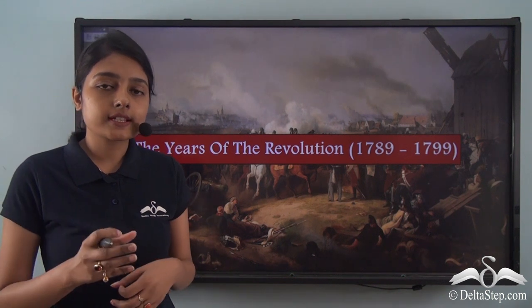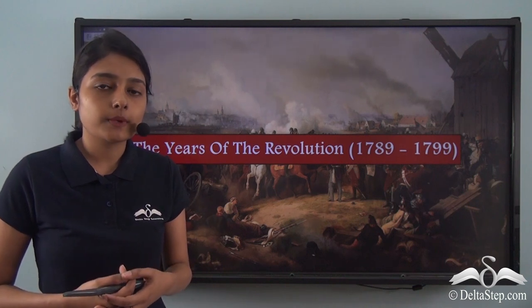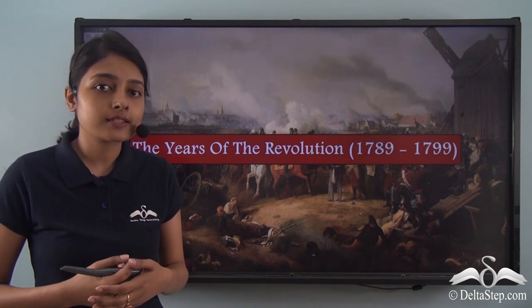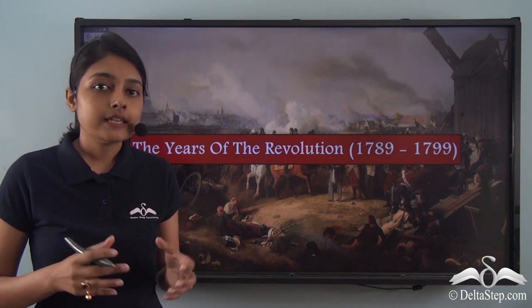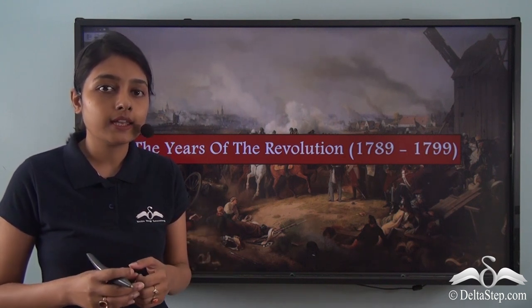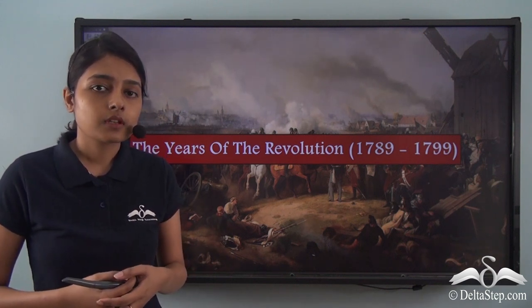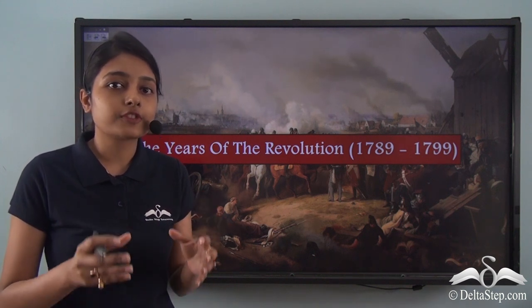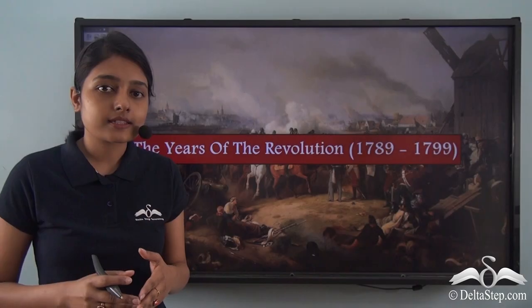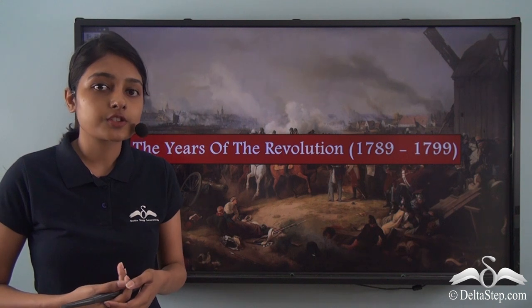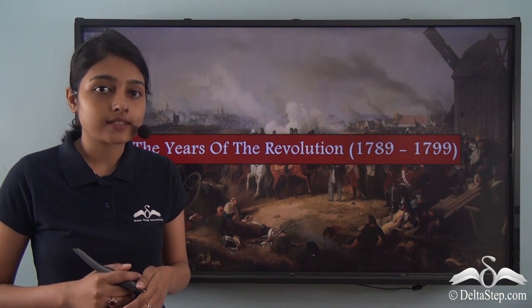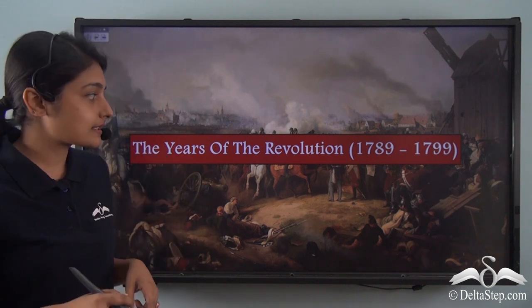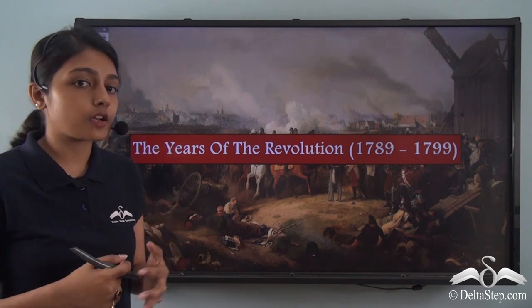In the last video, we were discussing the various events that led to the storming of the Bastille. The Bastille was the state prison of France before the outbreak of the French Revolution. Since it was considered a symbol of oppression, the people of France stormed this state prison. In this lesson, we will be discussing the events that took place after the storming of Bastille and the various events that together formed the French Revolution.